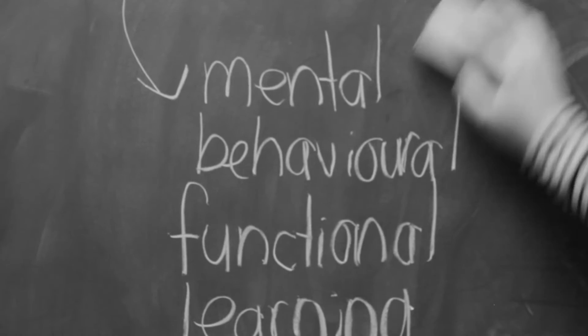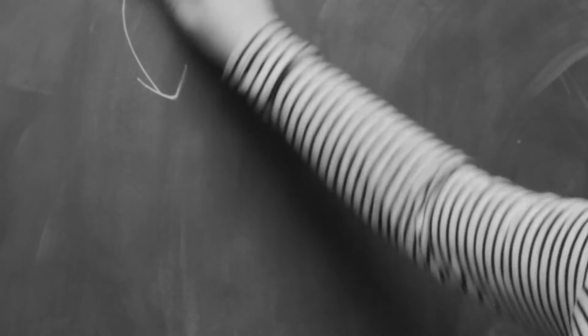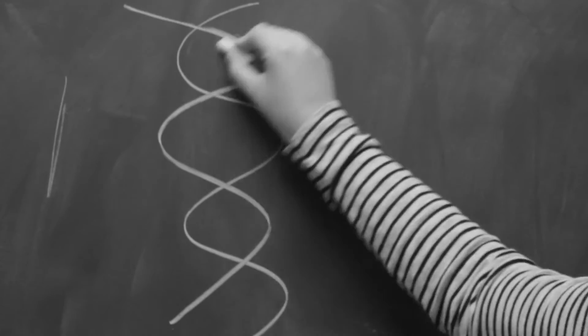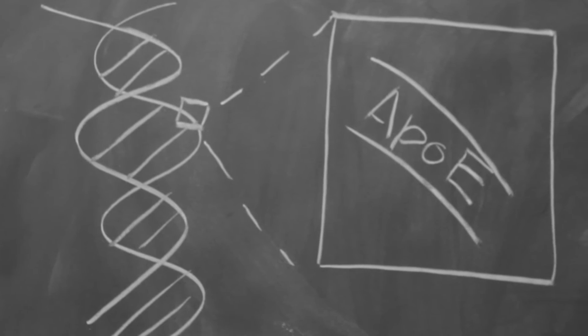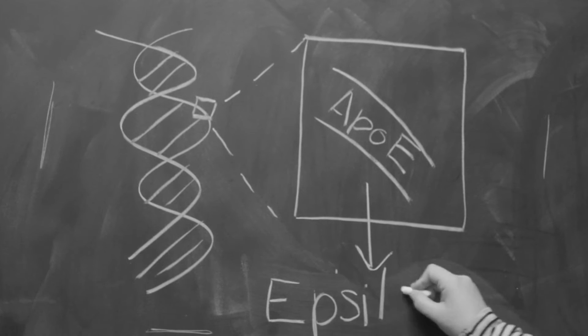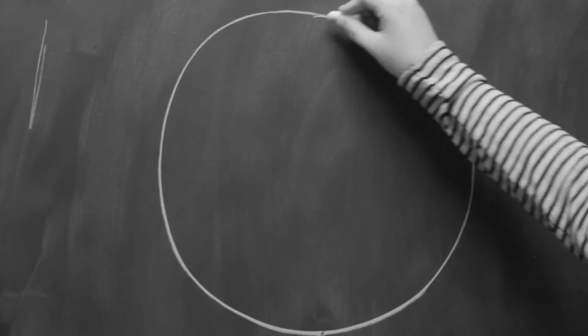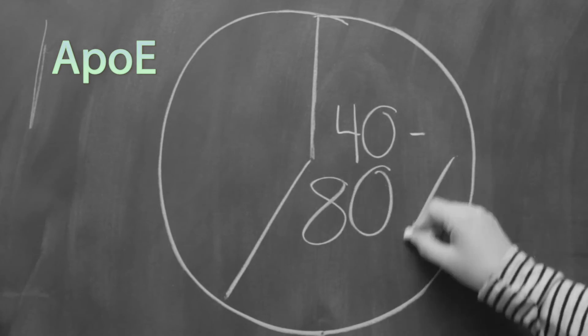There are many biological factors that lead to the development of AD. A common genetic risk factor of AD is the mutated variant of apolipoprotein E, or ApoE, called Epsilon-4. Forty to eighty percent of AD patients possess this version of ApoE.